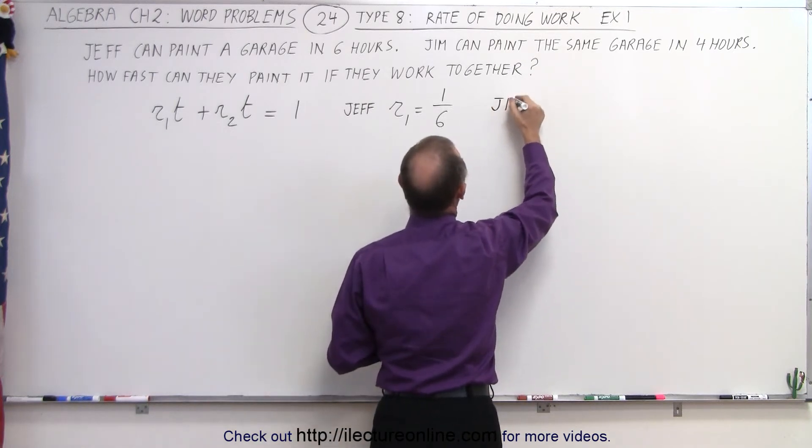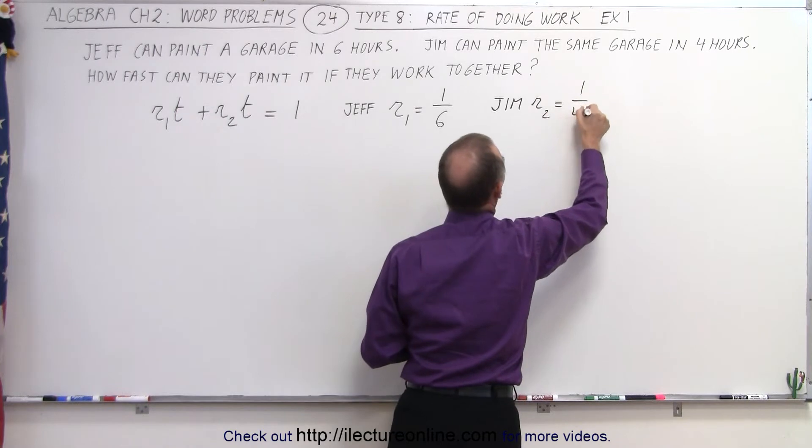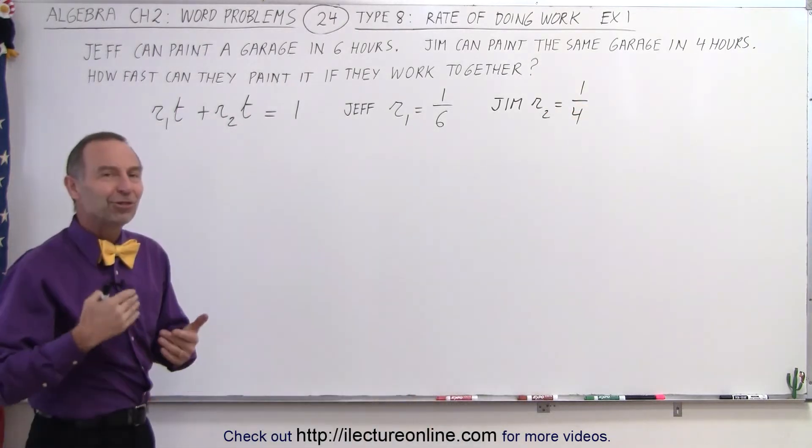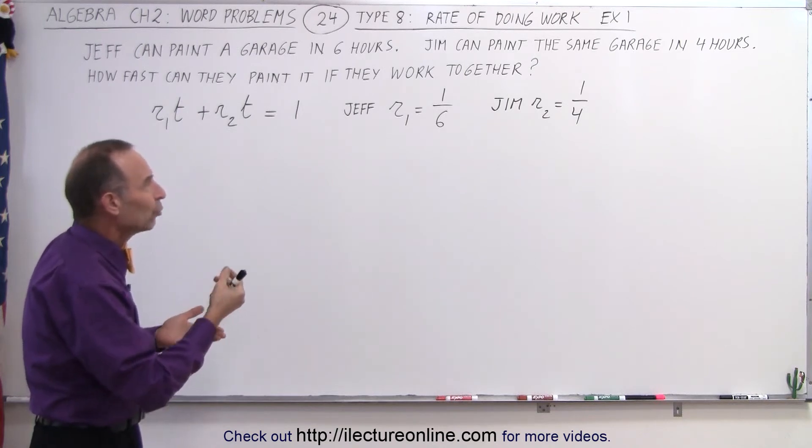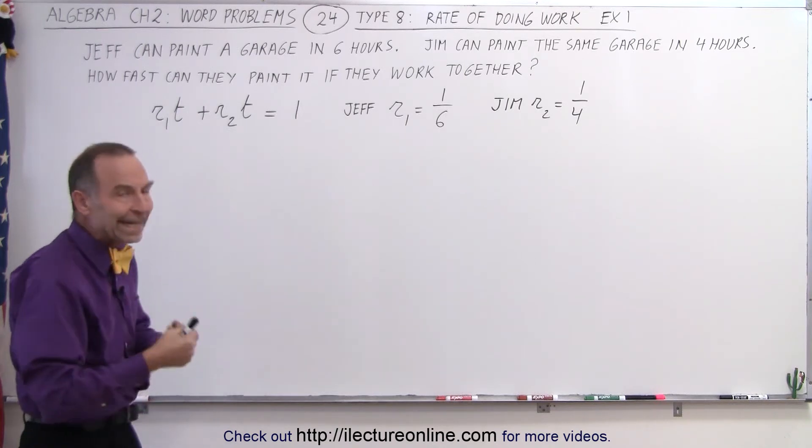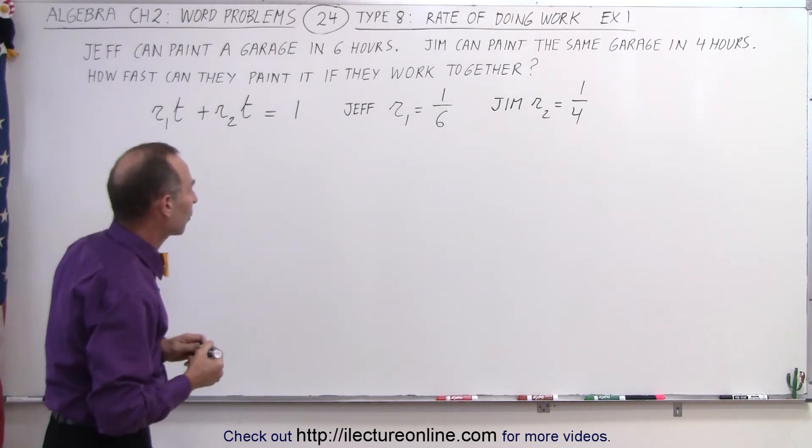And for Jim, the rate is equal to one over four because if Jim can paint a garage in four hours, then the rate at which he can paint is one fourth of a garage in every hour. So that's the rate at which he can paint. Now let's plug that into our equation.